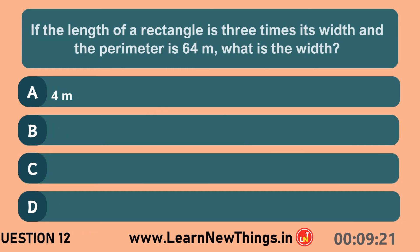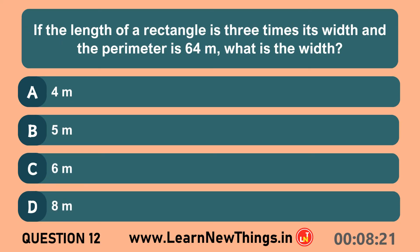If the length of a rectangle is 3 times its width and the perimeter is 64 meters, what is the width? 8 meters.